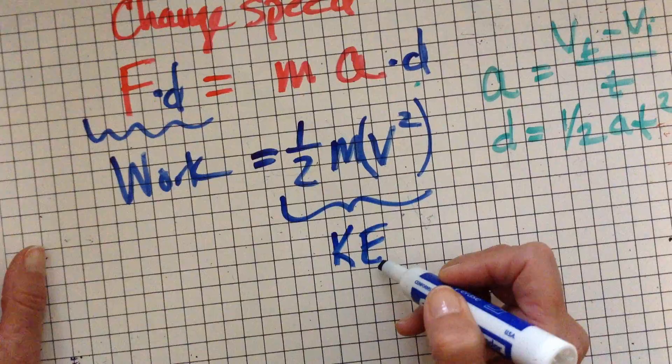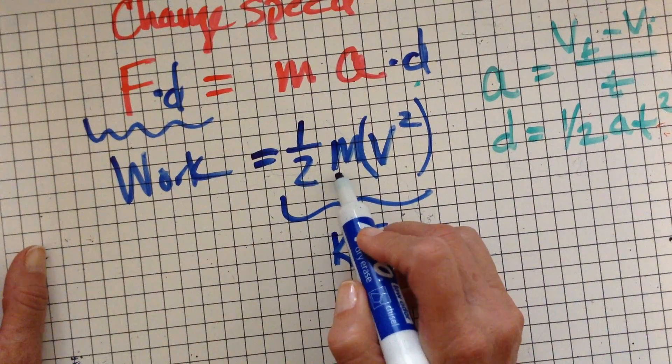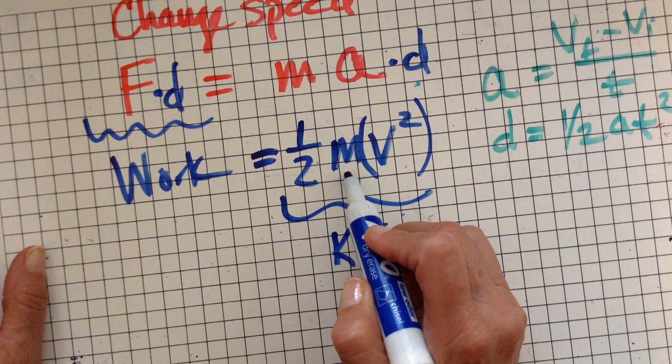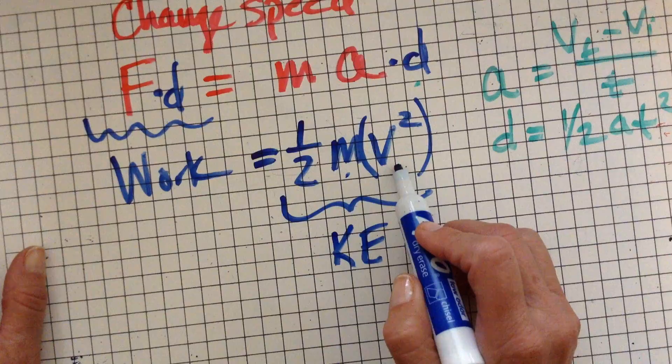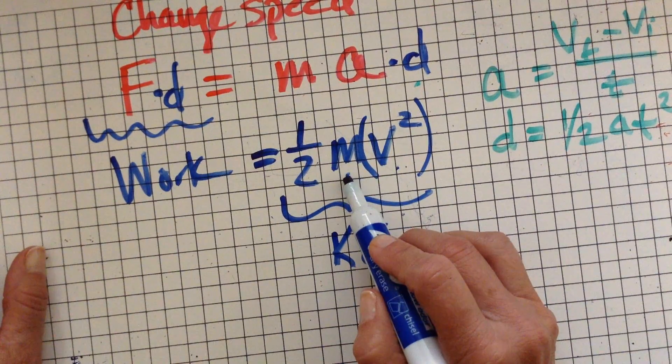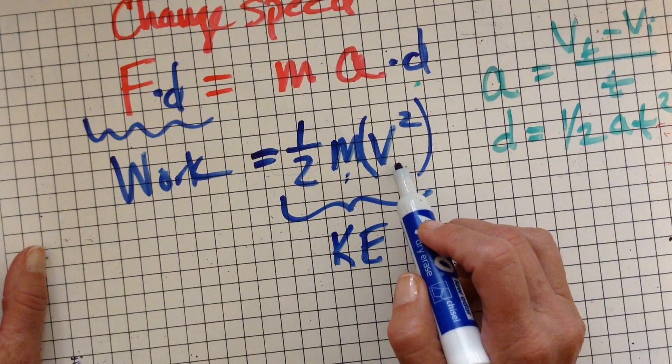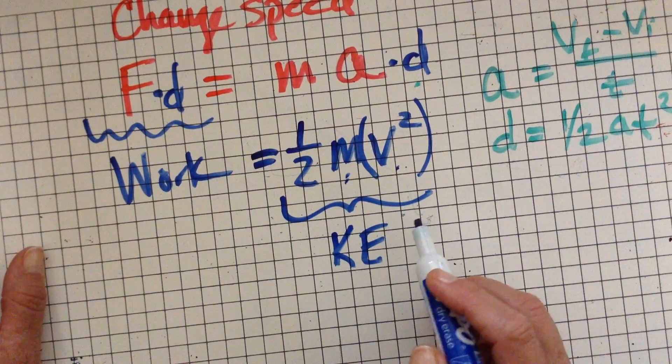So kinetic energy is going to depend on the mass. So how big it is means more kinetic energy and how fast it's going. But it is directly proportional to the mass. Here, it's directly proportional to the speed squared.